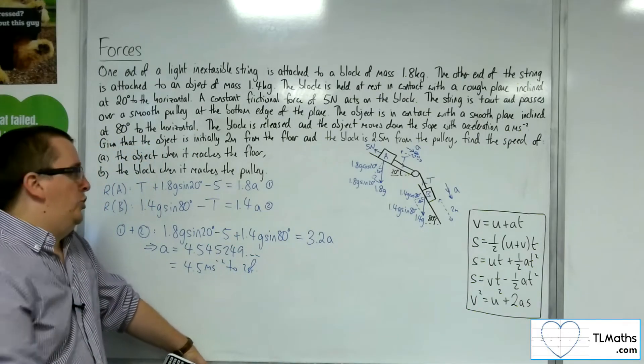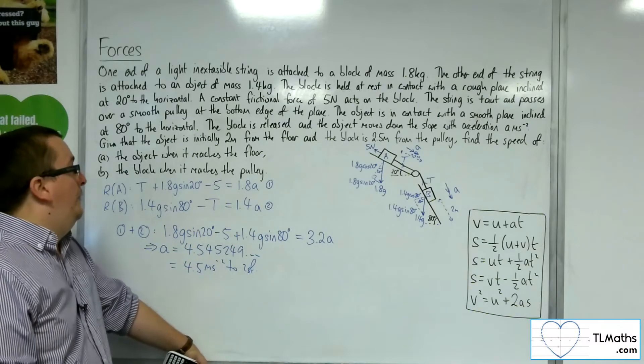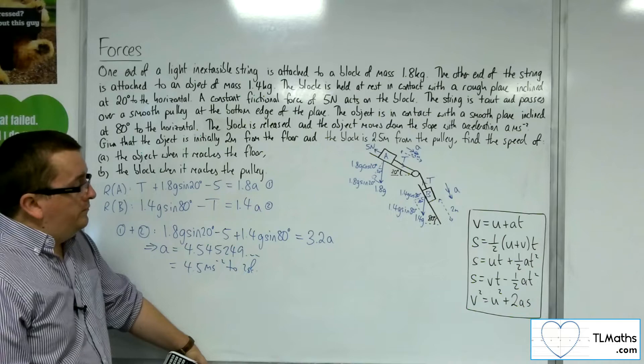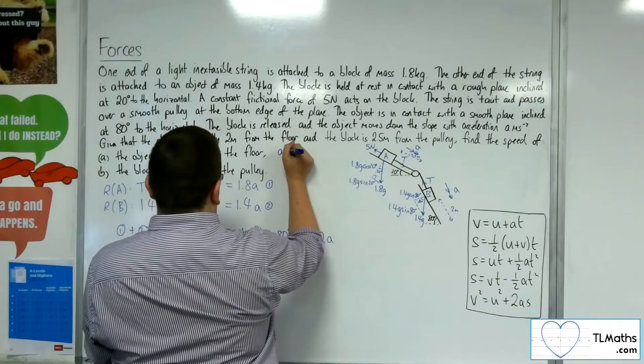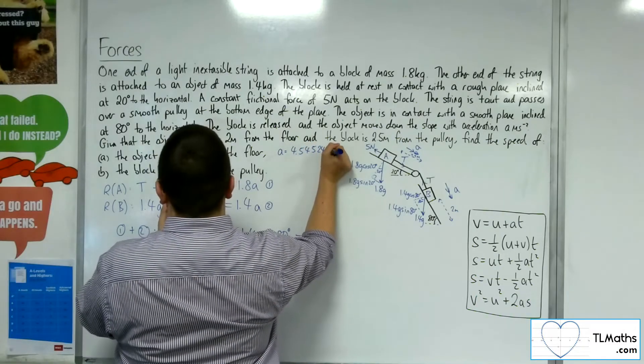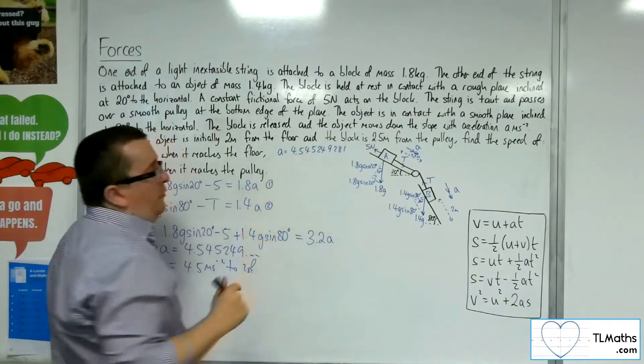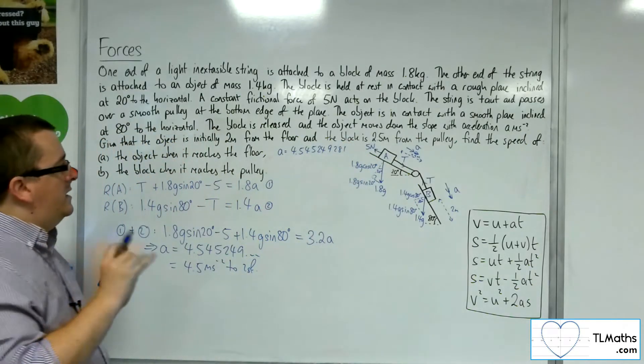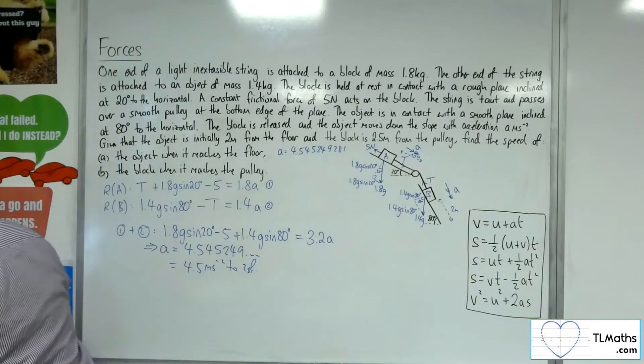If I'd been asked to find the tension, I could just substitute that into one of the two previous equations to work out T. So acceleration is 4.545249281. I'm just going to keep that full calculator display because I may need to come back to it. That's the first job done.